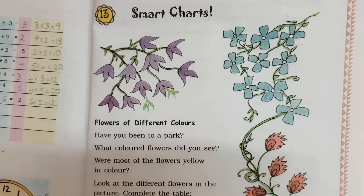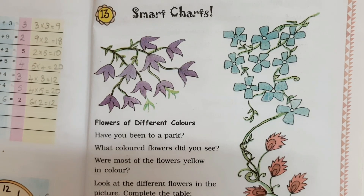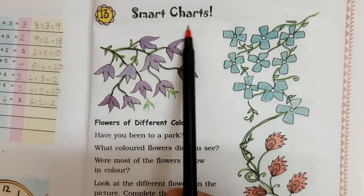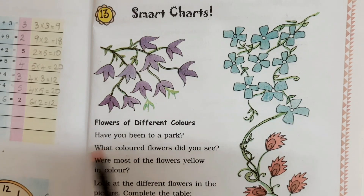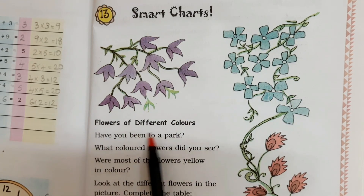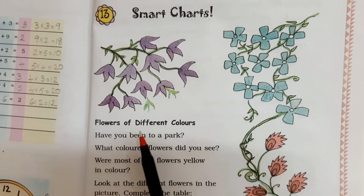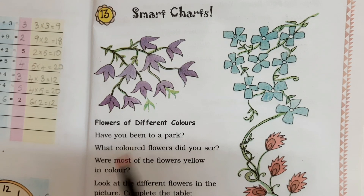Let's talk about Smart Charts, chapter 13. Smart Charts: Flowers of Different Colors.